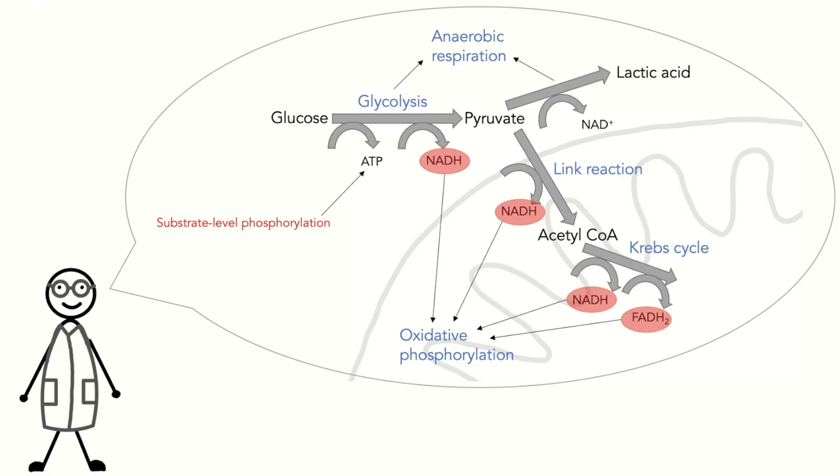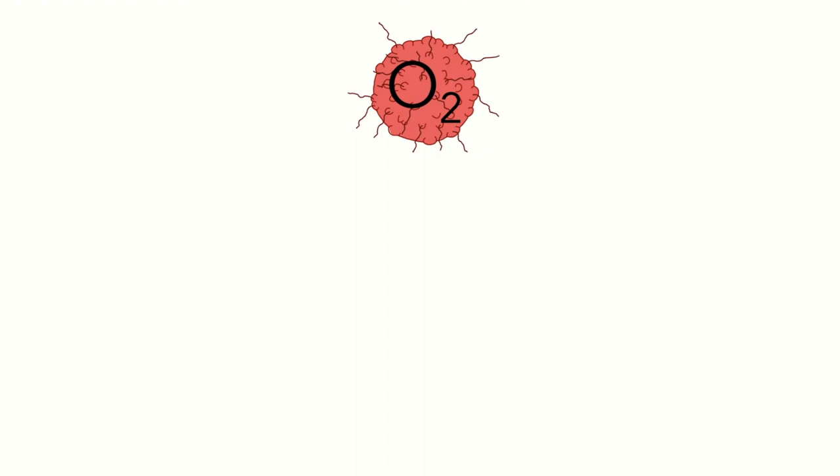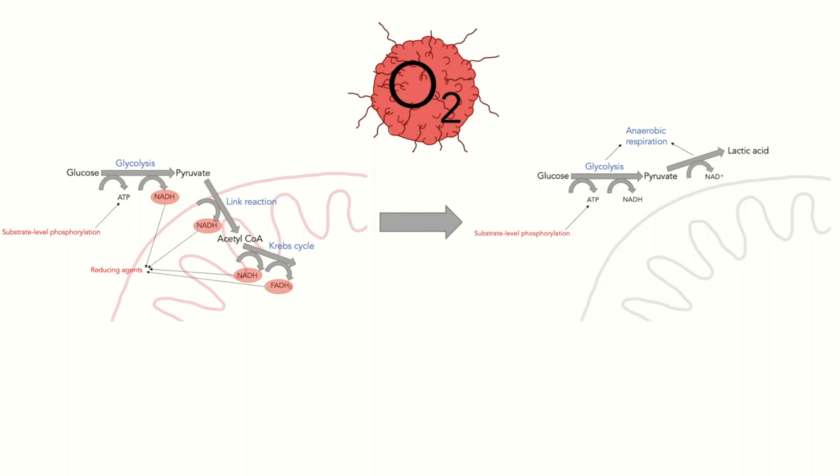Anyways, back to the topic. In cancer cells, even in the presence of oxygen, the cell will undergo cellular changes that induce this process. They undergo so-called aerobic glycolysis, or the Warburg effect.